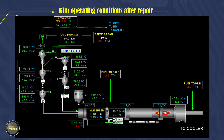Kiln operating conditions after repair and resetting the burner position, and resetting the primary air consumption and control parameters: fuel consumption in the kiln is about 40%, and fuel consumption in the calciner is about 60%. After the clinker quality target can be achieved, it can increase production capacity to approach the optimum kiln operation.